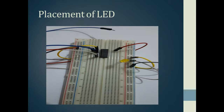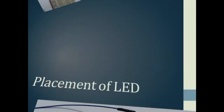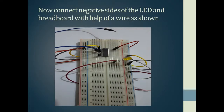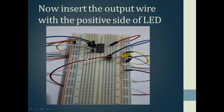I have placed the LED on the breadboard. I want to tell you that you can place the LED anywhere in the breadboard outside of the rows occupied by the IC and the power supply columns. Now I am connecting the negative leg of the LED to the negative side of the breadboard. Then the output wire — the blue one — is connected with the positive side of the LED to verify the truth table of the OR gate.